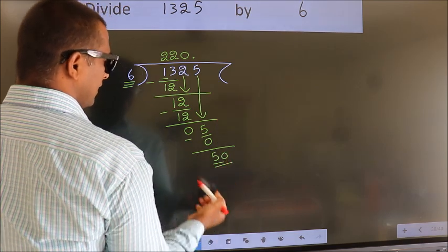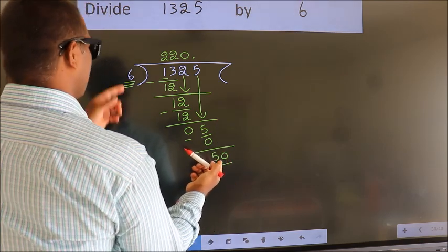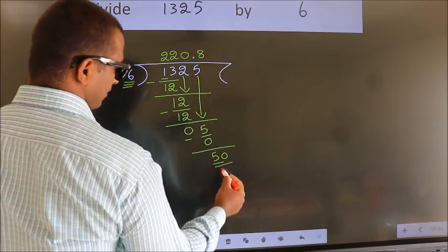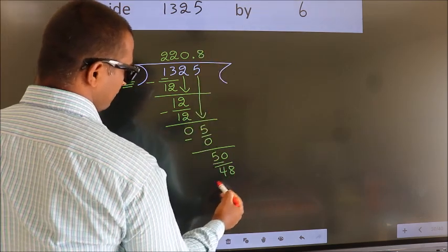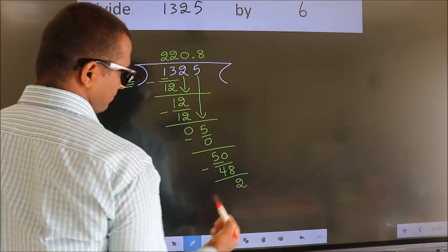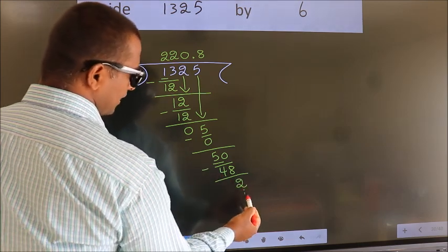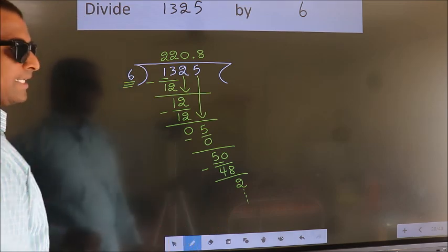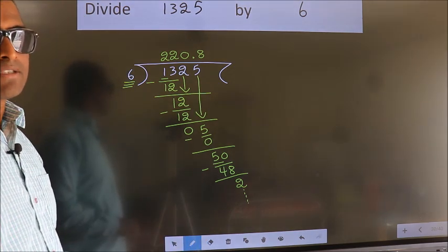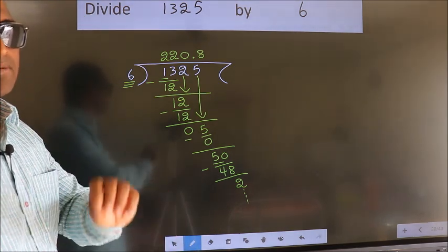So 50. A number close to 50 in 6 table is 6 times 8 is 48. Now we subtract. We get 2. And you continue the division. I am not doing that. Did you understand where the mistake happens? You should not do that mistake.